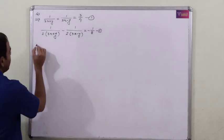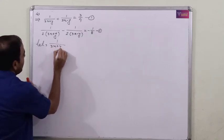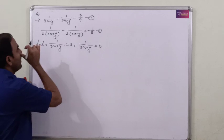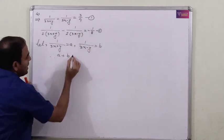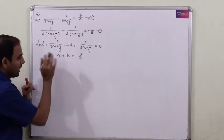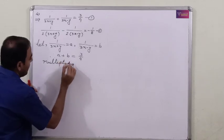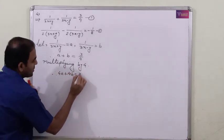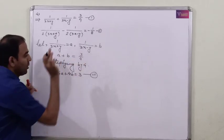Let 1 upon (3x plus y) be A and 1 upon (3x minus y) be B. Substituting into the first equation: A plus B equals 3 by 4. Multiplying through by 4, we get the third equation: 4A plus 4B equals 3.